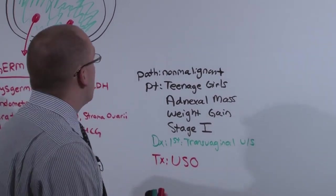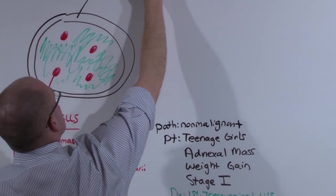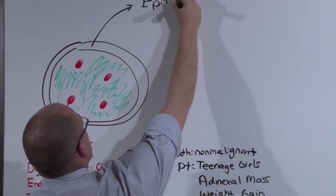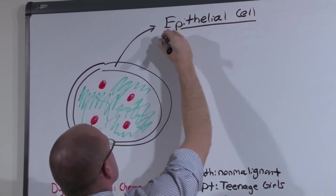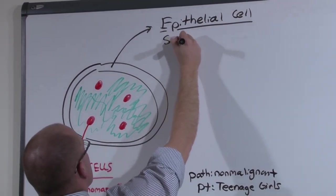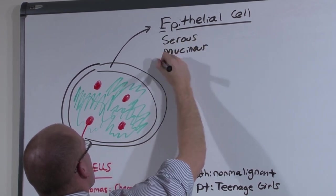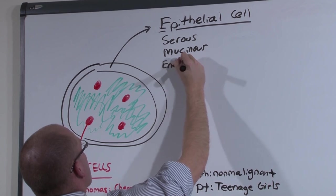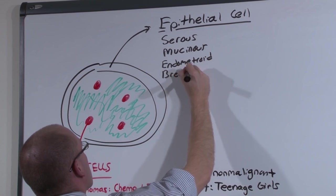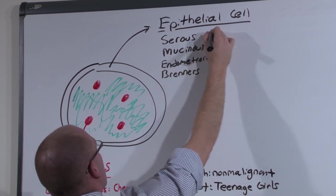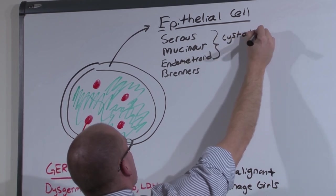If we compare that to the epithelial cell tumors, this is the one you think of that has the poor prognosis. It also has a bunch of different types: serous, mucinous, and endometrioid, along with Brenner's tumor. These are all considered cystadenocarcinoma.